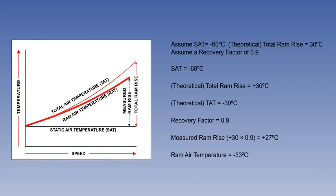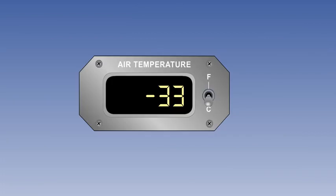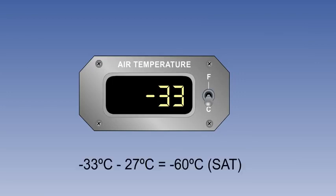Applying plus 27 to minus 60 gives us a ram air temperature of minus 33 degrees Celsius. This is the figure which you would actually see on the ram air temperature gauges. You would then use one of several methods to arrive at your correction factor of minus 27 degrees and then apply it to get the static air temperature, which is what you want.